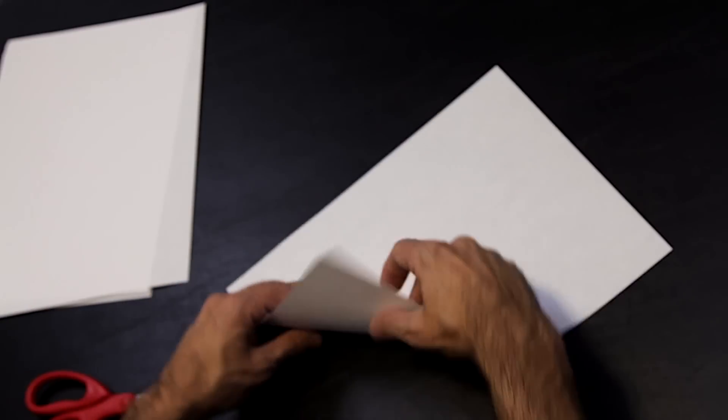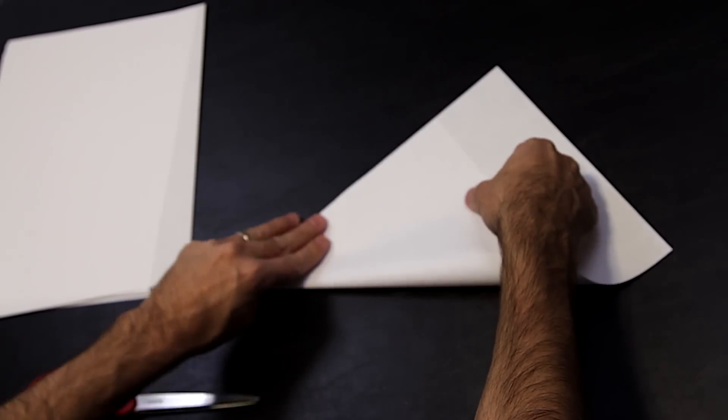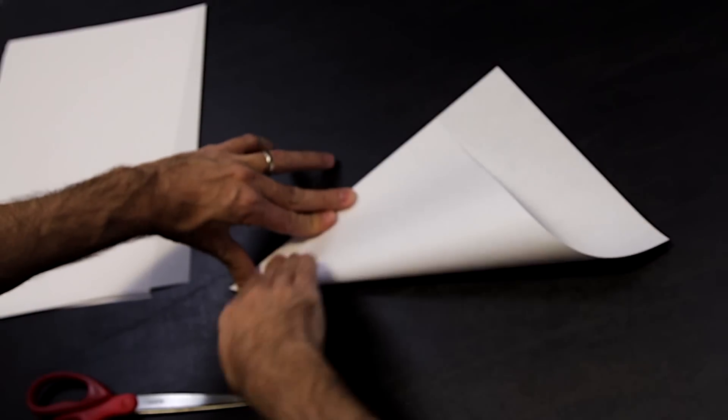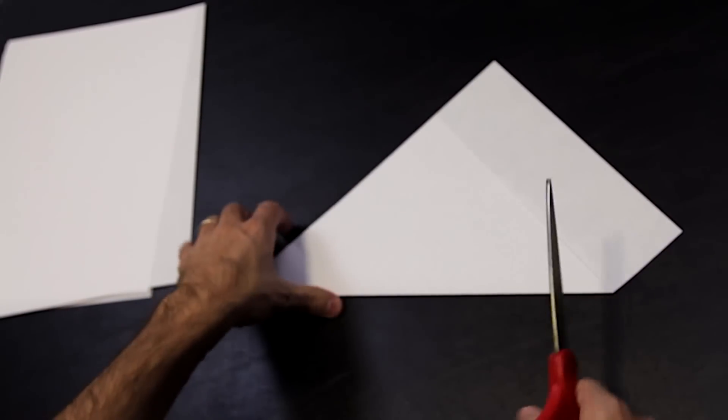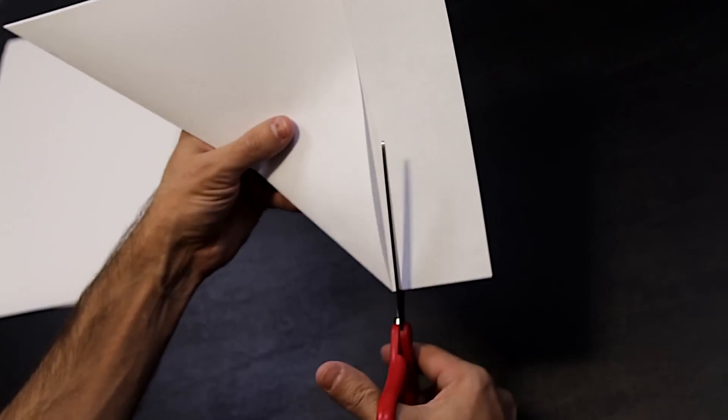We will start with making a square by folding one of the corners toward the opposite side creating a 45-degree angle. Cut off this remaining bit of paper at the end.